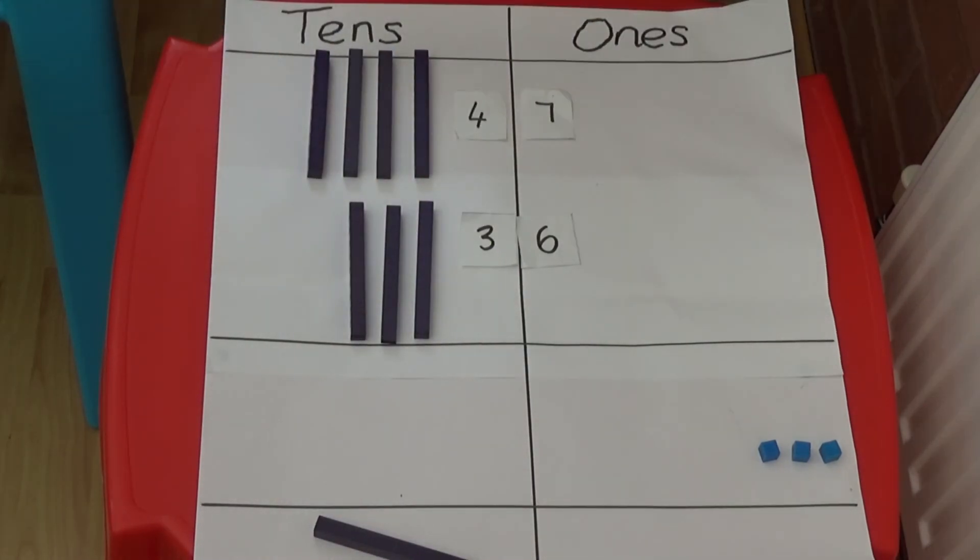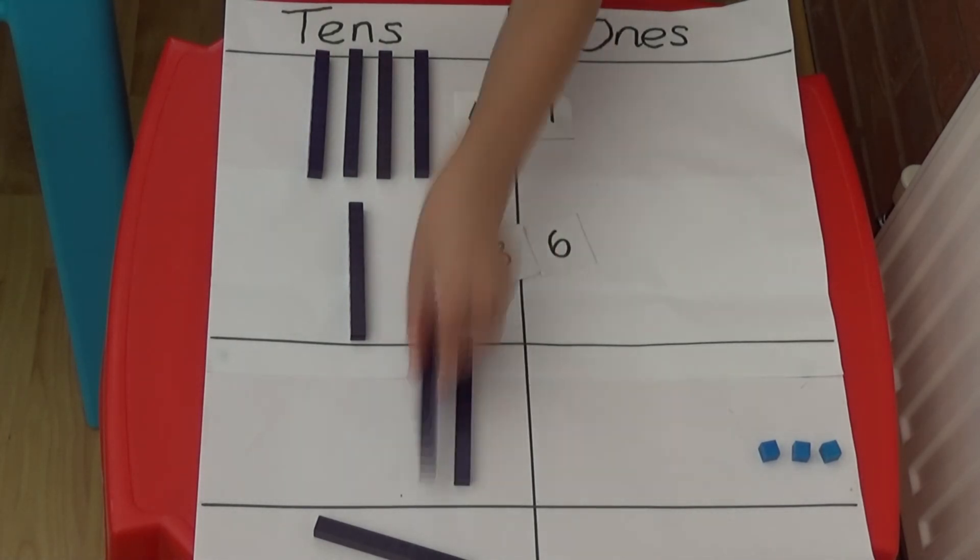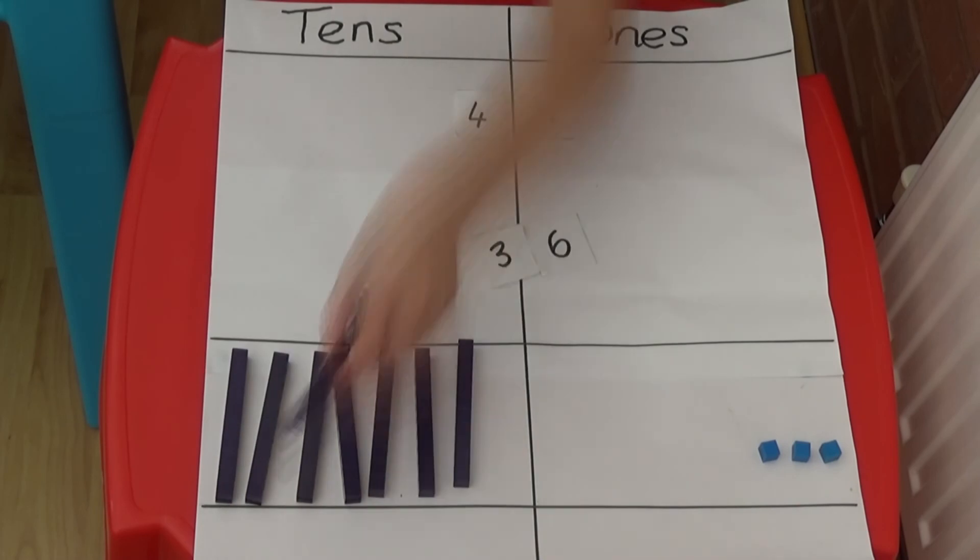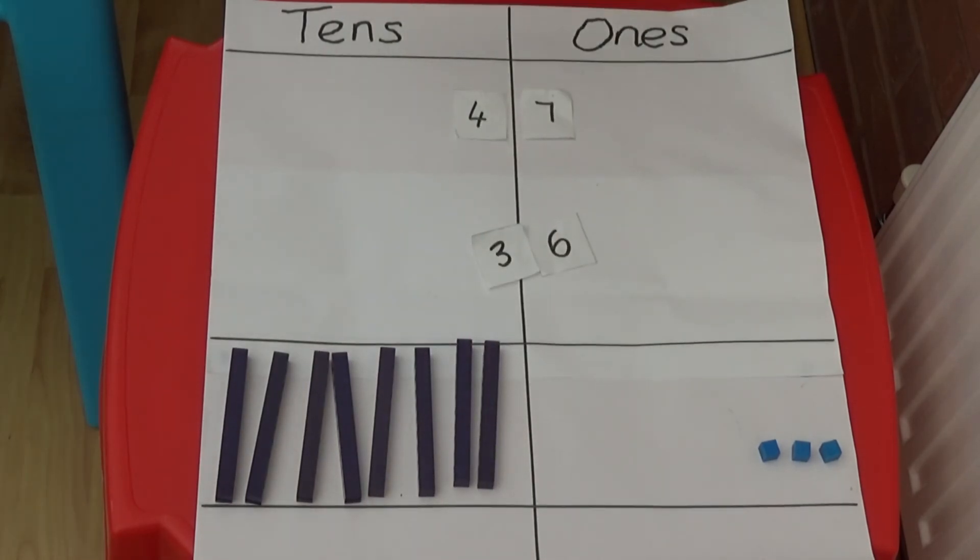I'm now going to add my tens. Four add three equals seven tens. But I also need to add the ten from underneath. So we have eight tens altogether. So 47 add 36 equals 83.